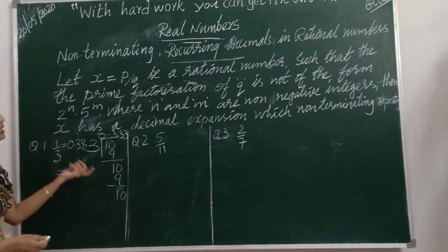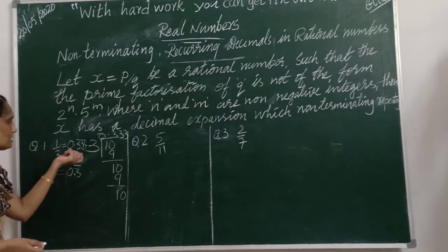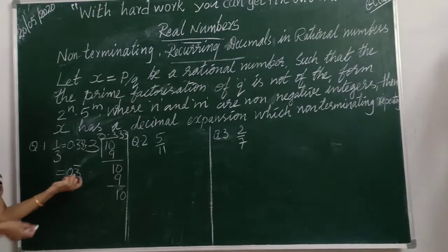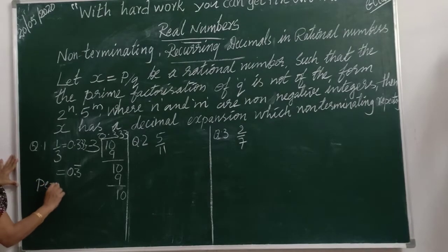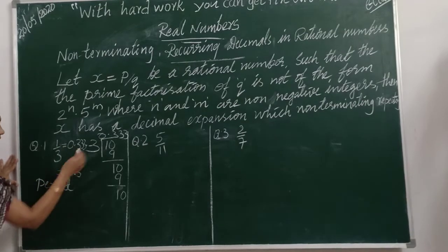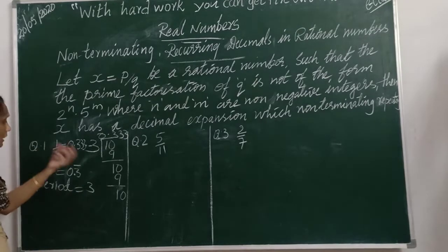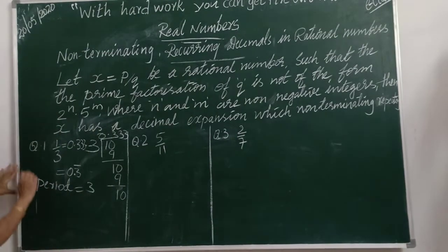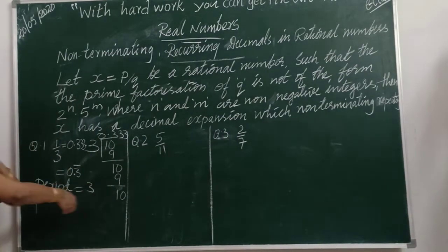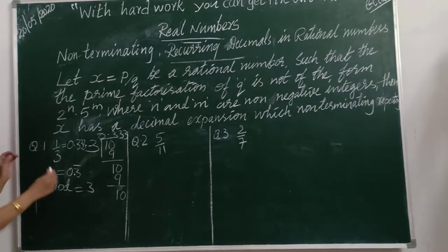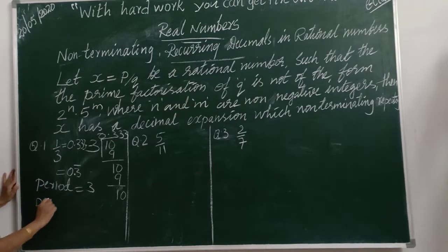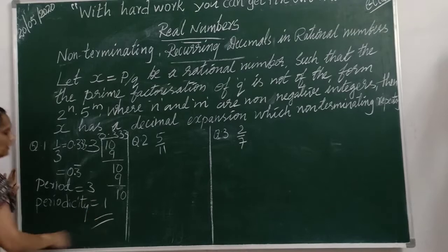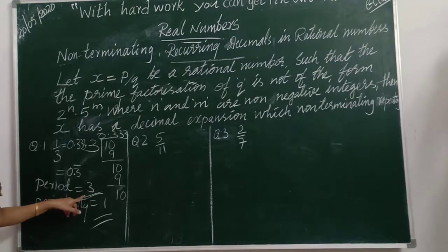Bar means that digit is repeating. The part which is repeating is called the period, or the block. Here the period is 3 — the digit 3 is repeating. How many digits are repeating? Only one digit is repeating, so the periodicity is 1. The block is 3 and the periodicity is 1.